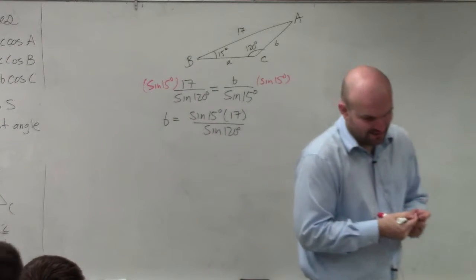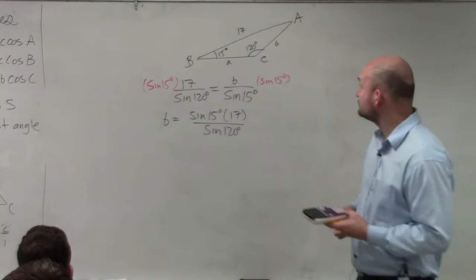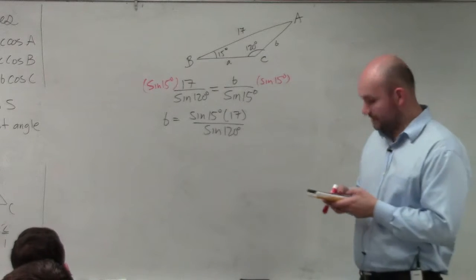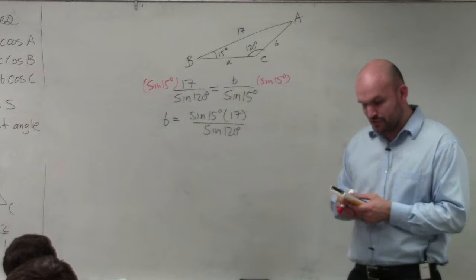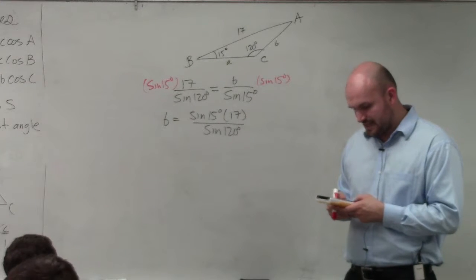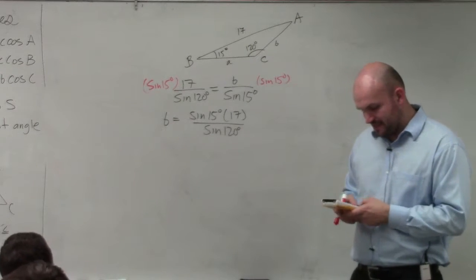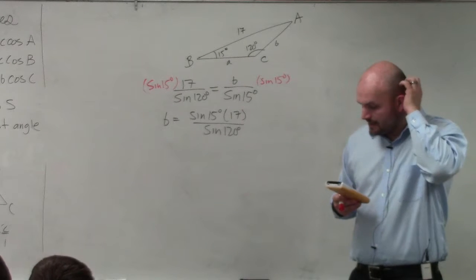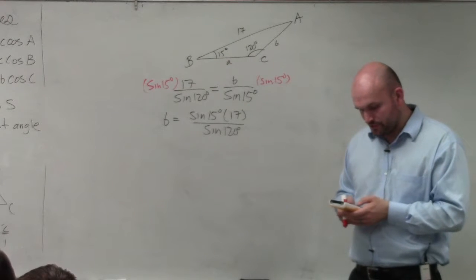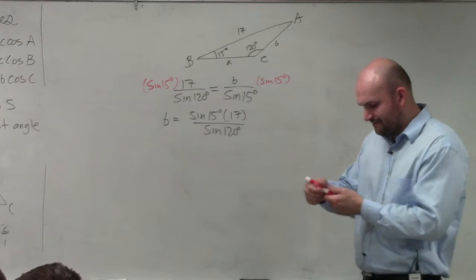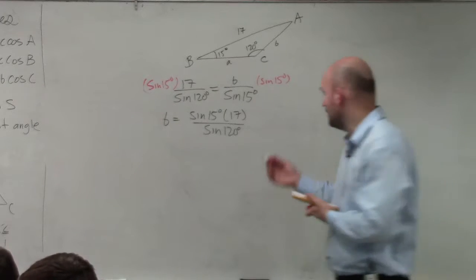All over the sine of 120 degrees. Now, just to go ahead and get that, I would type that into my calculator. So then I'll just do sine of 15. Make sure you close your parentheses times 17, and then divide it by the sine of 120.